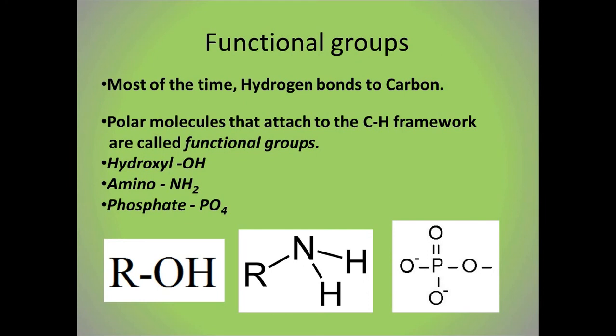Attached to the carbon-hydrogen framework are polar molecules called functional groups. The carbon-hydrogen framework has no real properties of its own because it's just the framework. Each functional group that attaches to it has its own properties, and it passes those properties on to the carbon-hydrogen framework when they become attached — so that framework goes from having no properties to the properties of its functional group.